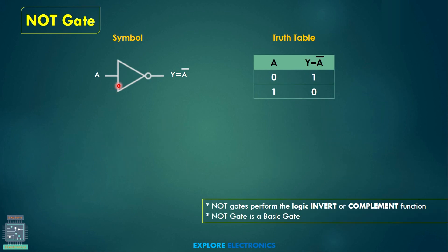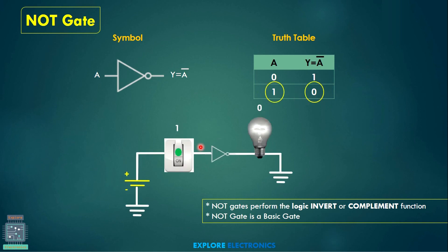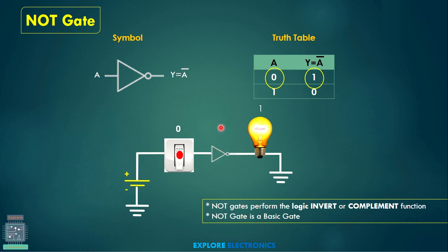What is the NOT gate? The NOT gate is represented with a triangle symbol and the output has a bubble. If A is the input, A-bar is the output — it inverts the input and provides a complementary output. If A equals 0, the output is 1. If A equals 1, the output is 0. In the switch diagram, even if the switch is 1, because of the inverter the bulb is not glowing; when the switch is off, the inverter makes the bulb turn on. That is the functionality of the inverter.